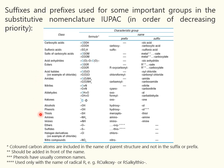Most characteristic groups may be cited either as suffixes or as prefixes. But only one kind of group — the principal group — is to be cited as a suffix. Within these groups, a conventional order of priority has been established. This means the principal group is occurring as high as possible in the table. All other characteristic groups are then cited as prefixes.